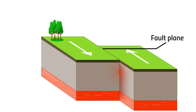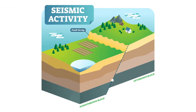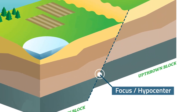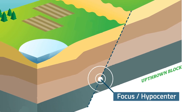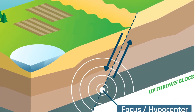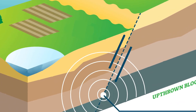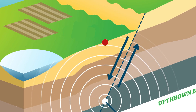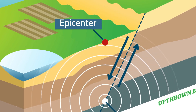But where does an earthquake originate? The area where an earthquake originates is called the focus or hypocenter. From here, the earthquake vibrations, or seismic waves, travel outward up to the Earth's surface, which is referred to as the epicenter.